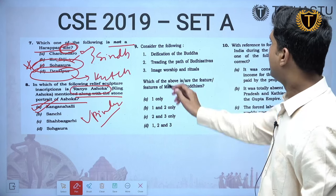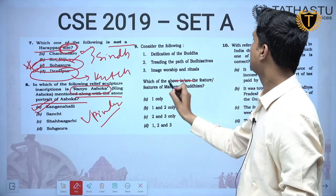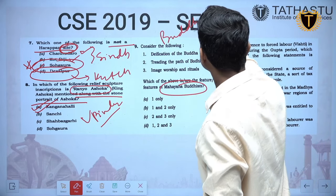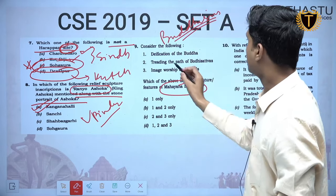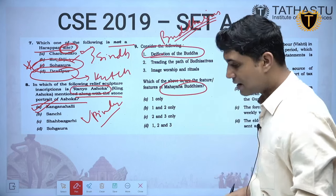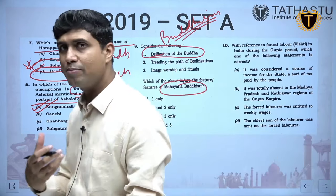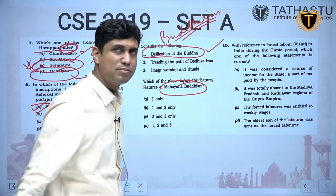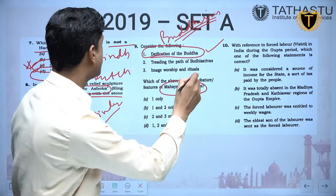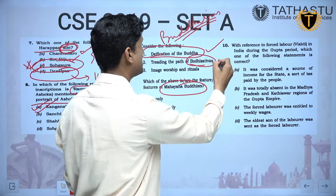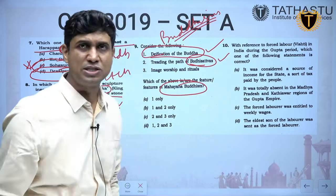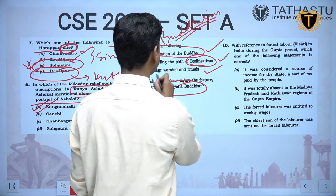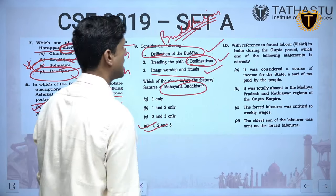Consider features of Mahayana Buddhism. Deification of the Buddha — Buddha becoming a deity and being worshipped — yes, Mahayana Buddhism started idol worship. Treading the path of Bodhisattva — the concept of Bodhisattva is also related to Mahayana. Image worship and rituals — also Mahayana. All three are part of Mahayana Buddhism, so the answer is D.